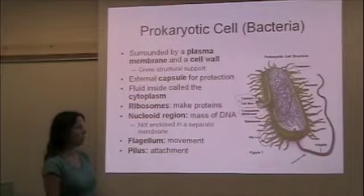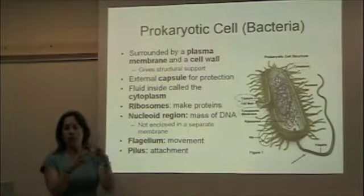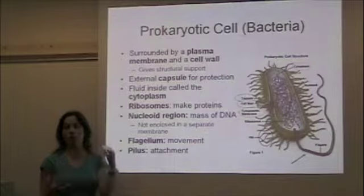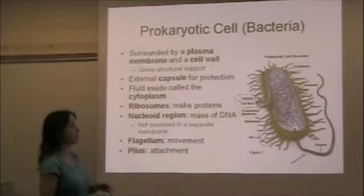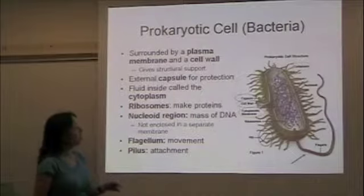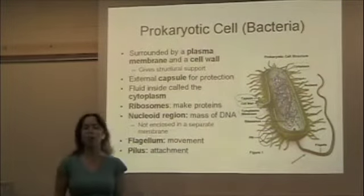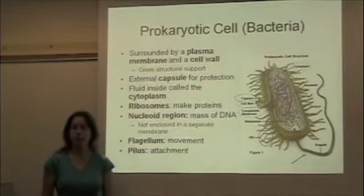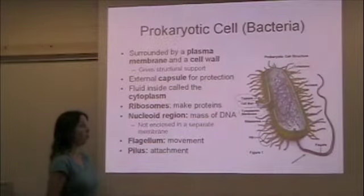Surrounding the bacterial cell and separating the internal from the external environment is the plasma membrane. And then outside of that plasma membrane there is a cell wall. The cell wall is more rigid and gives the cell structural support and stability.